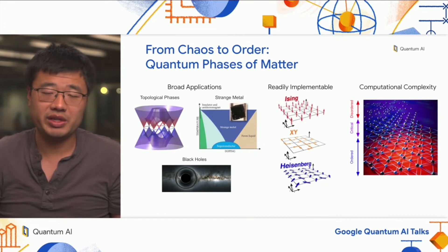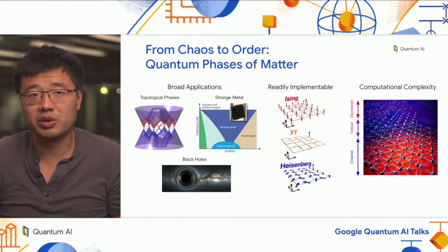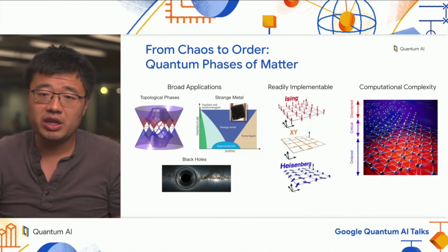For all quantum phases of matter, there's always some phase transition where it transfers into a disordered or chaotic phase. Often in between the ordered phase and the chaotic regime, there is a critical region where the computational complexity rises, and there's a chance to achieve practical quantum computer advantage.